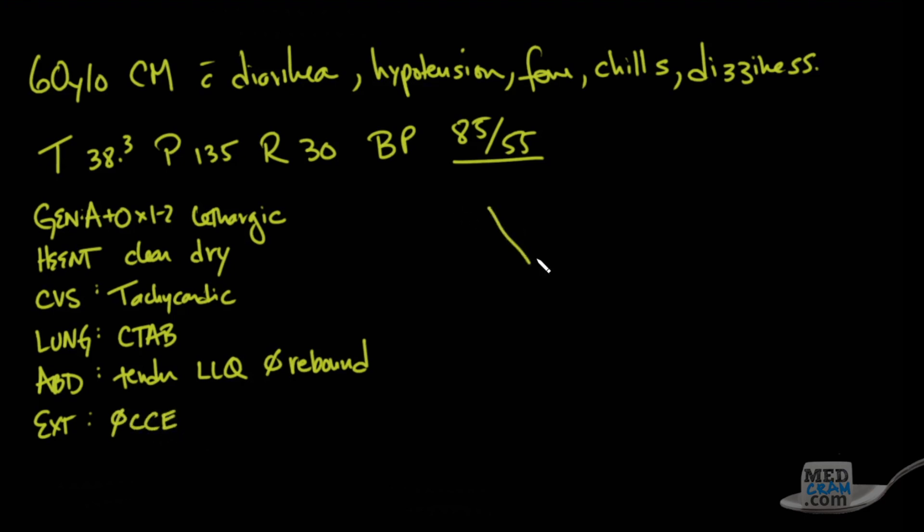Laboratory values look like this. His white blood cell count is 55.0, his hemoglobin is 16.0, his platelet count is 85, and his hematocrit is 48.0.